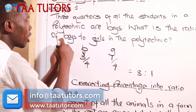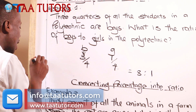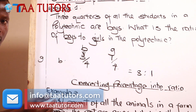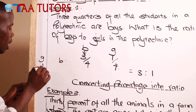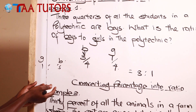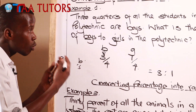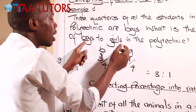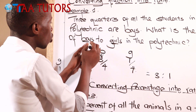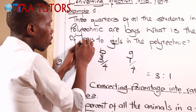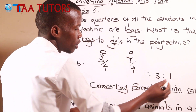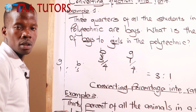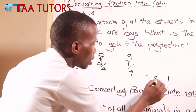If you were told girls to boys, the ratio would be one to three. But that was not our question. Our question asks for the ratio of boys to girls, so the answer is three to one.